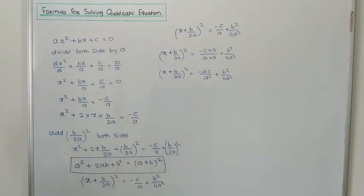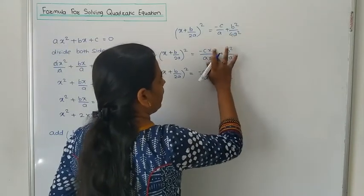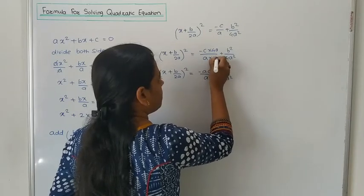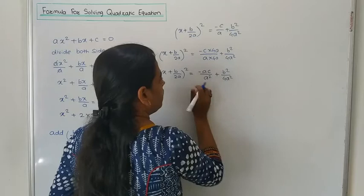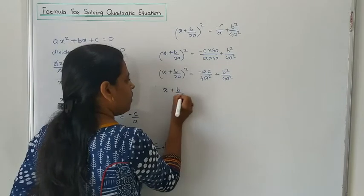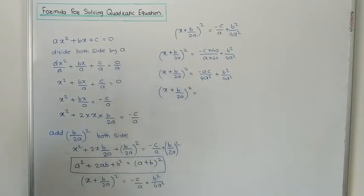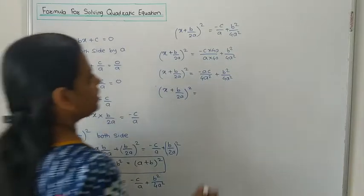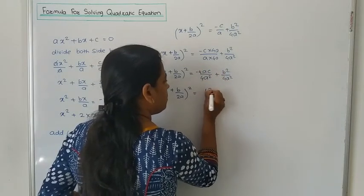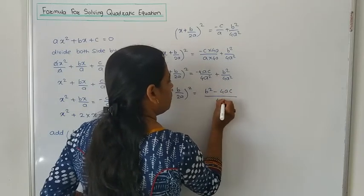We want to get the denominator as 4A². Therefore: (X + B/2A)² = (B² - 4AC) / 4A². Taking the square root of both sides, since the left side has a square, that square cancels and goes to the root side.